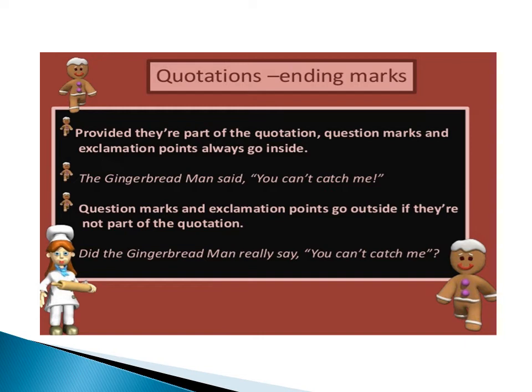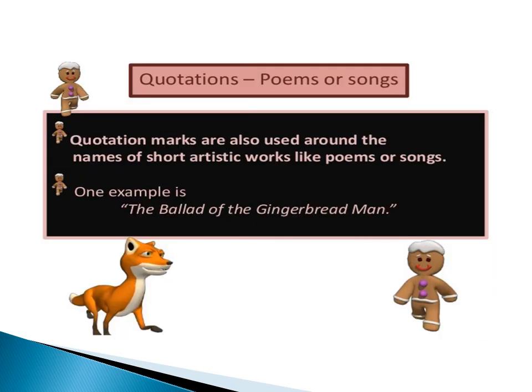Question marks and exclamation points go inside only if they're part of the quotation. If they're not, they go outside. For example: Did the gingerbread man really say, "You can catch me"? This last example is completely different from the first because of the different situations and conditions. Quotation marks are also used around the names of short artistic works like poems or songs — for example, "The Ballad of the Gingerbread Man."